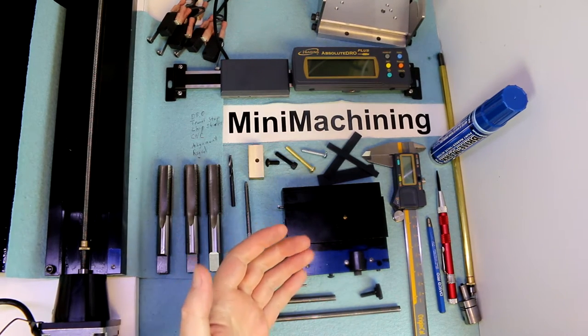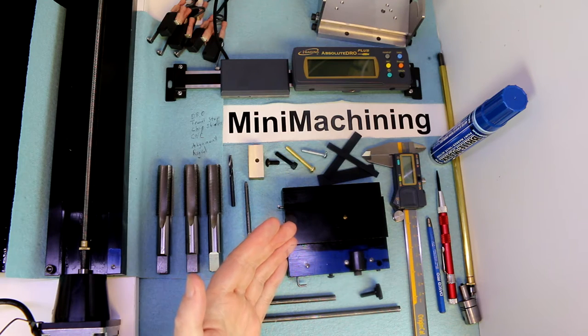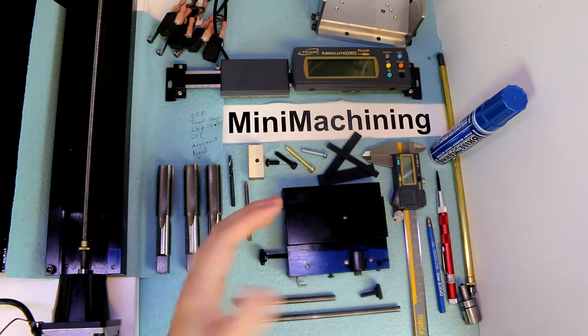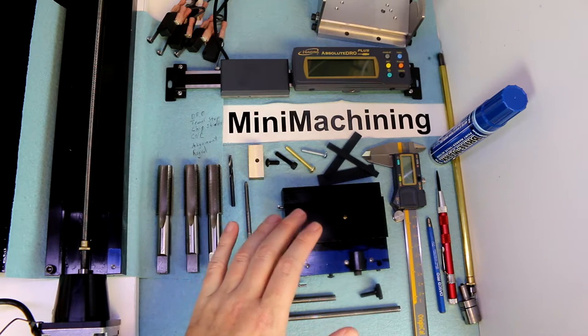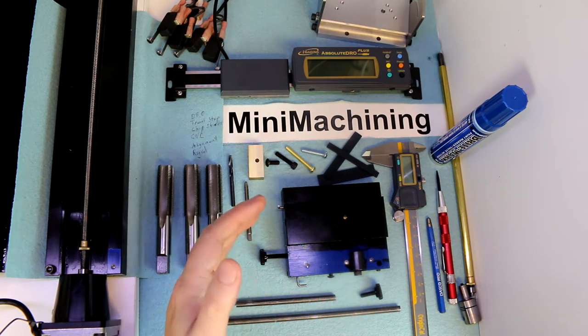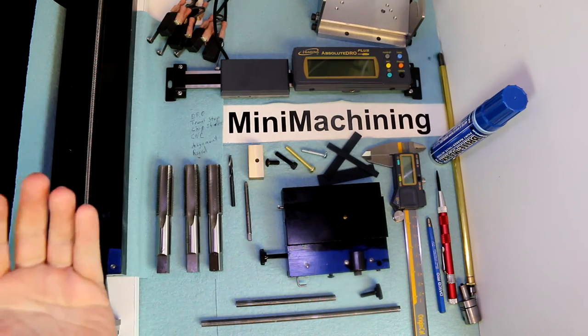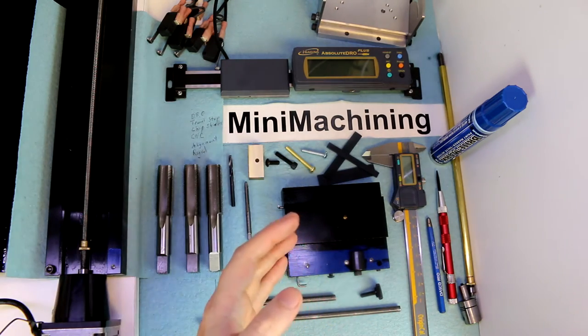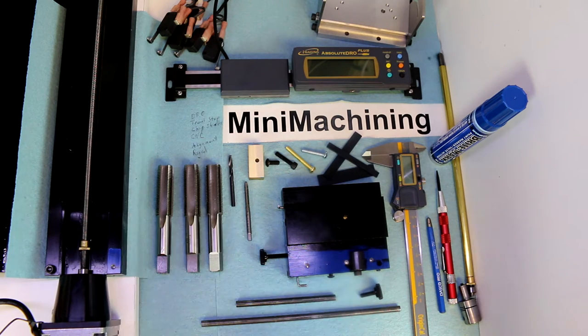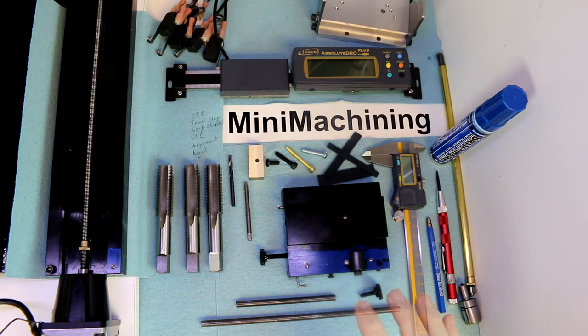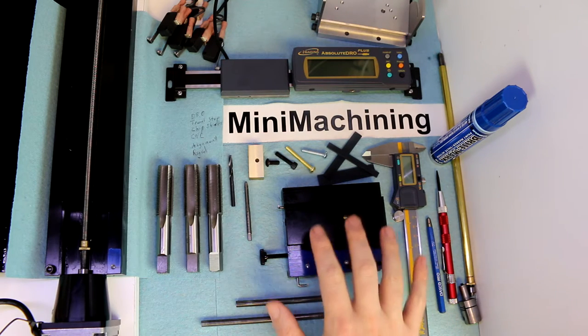So I want to add that functionality to the Sherline. And I want to do it in a way that's convenient to use and doesn't get in the way of other operations. So I've seen some travel stops that use the T-slots, but then if you want to put anything on, you've got to take the travel stop off, slide in your other T tools, and then put the travel stop back on. So I wanted a way that I can leave a travel stop on the machine and use it in both axes. So we're going to be doing that with this setup.